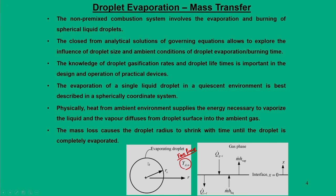There is a concentration difference between within the sphere and the far field. At the boundary or interface where x equals zero, within the droplet it is in the liquid phase, and outside the sphere in the gas it is in the vapor phase. For the droplet to evaporate there must be some exchange of heat, and due to this the fuel droplet diffuses into the ambience.